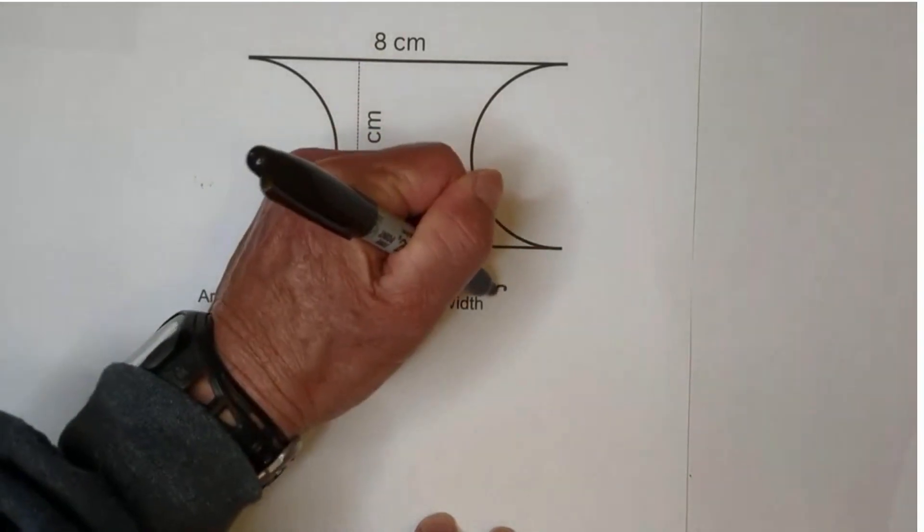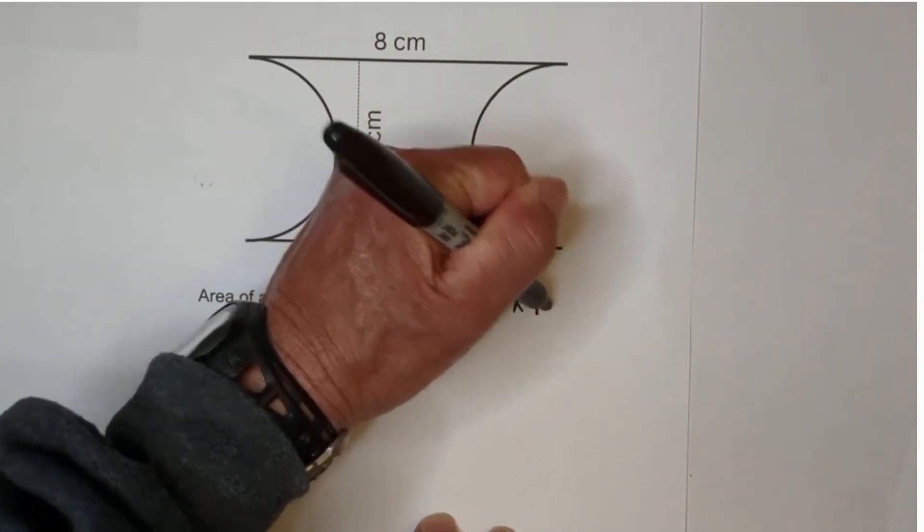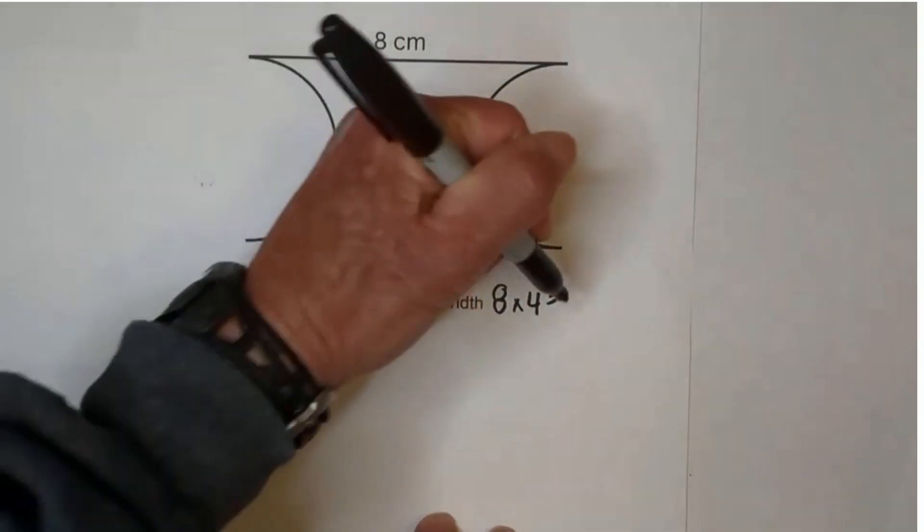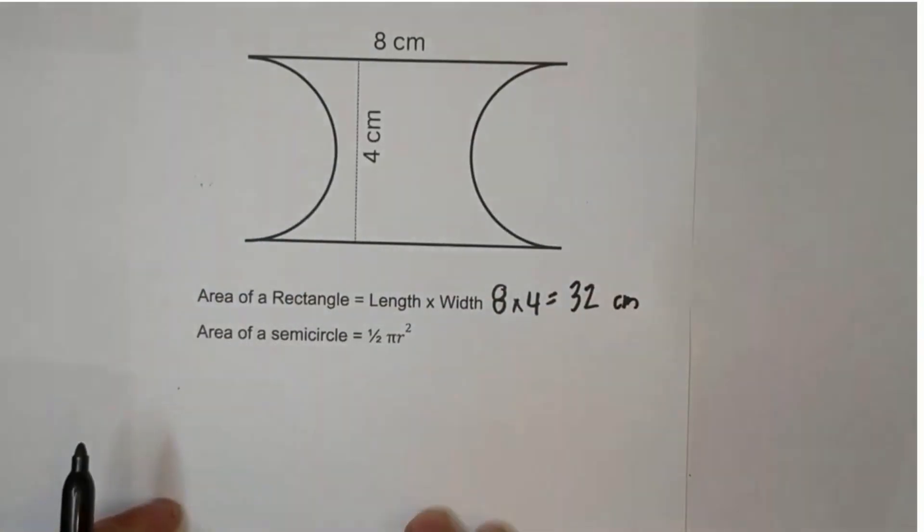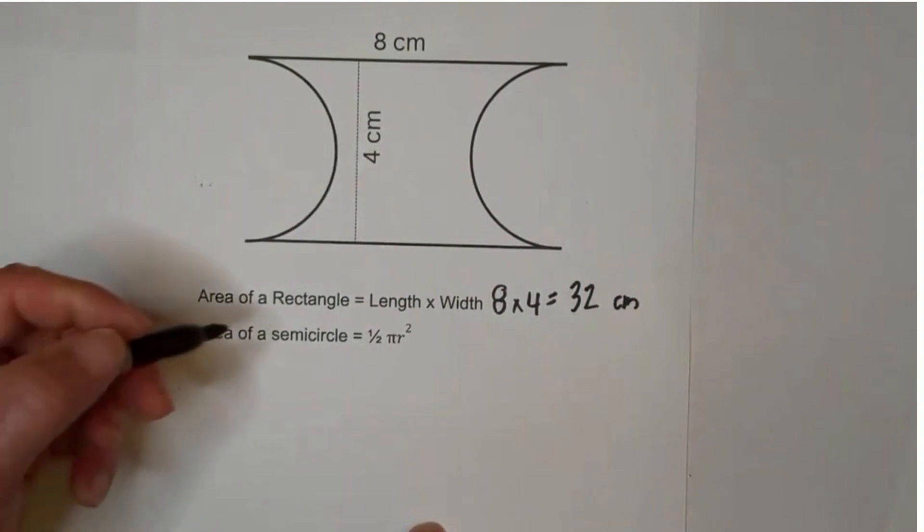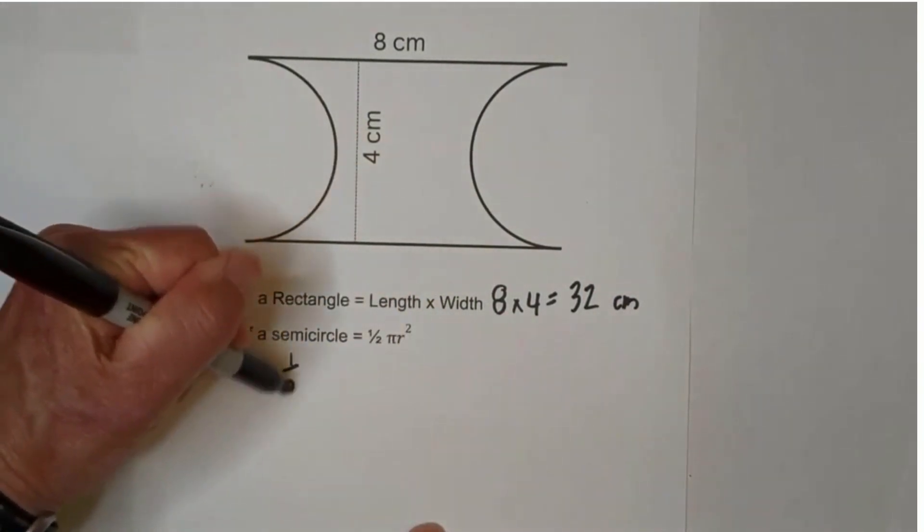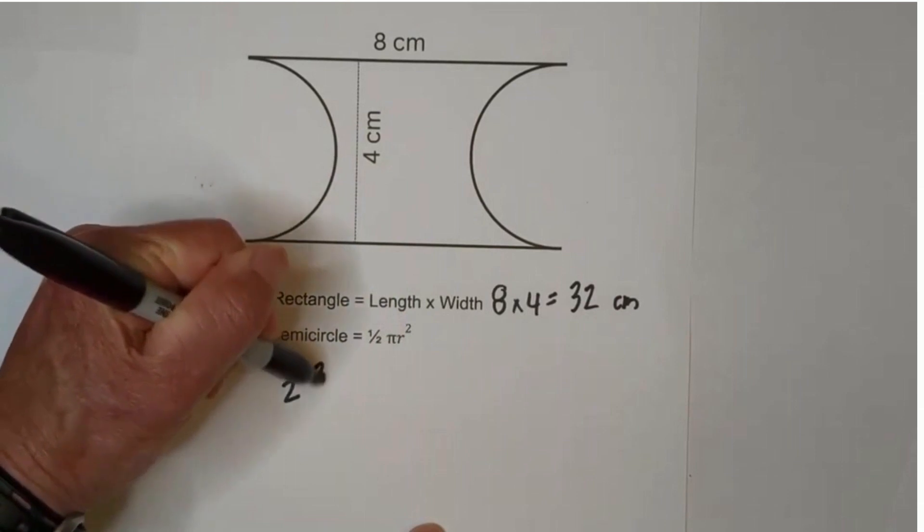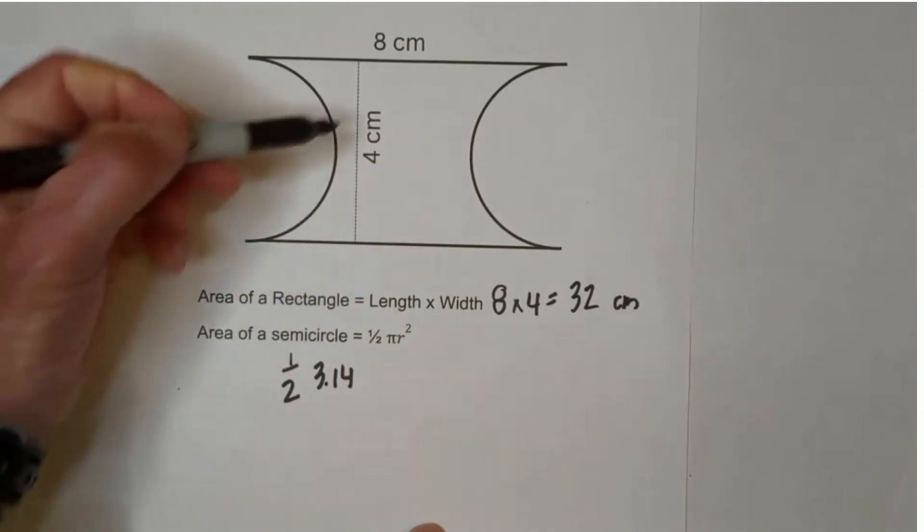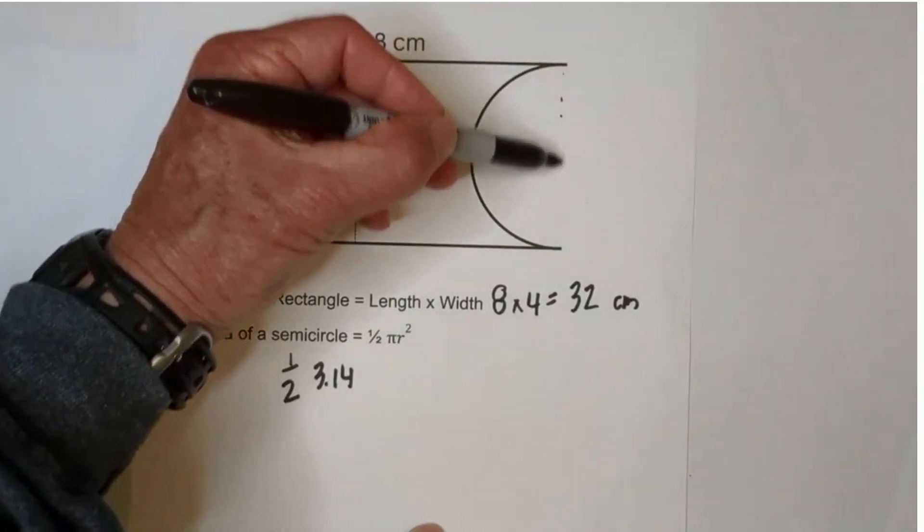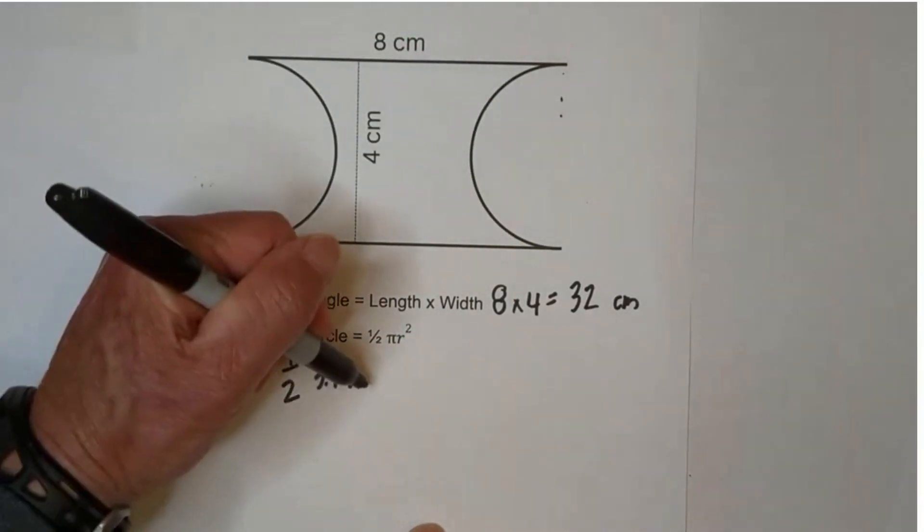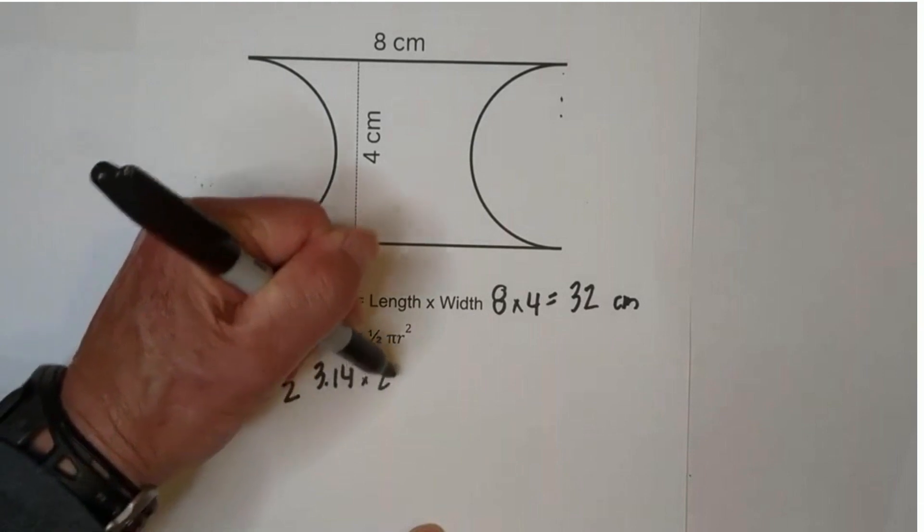The length is 8 and the width is 4, so 8 times 4 is 32. And again, we're in centimeters. Now for the semicircle, we're going to go 1/2 and let's use pi, which is 3.14.